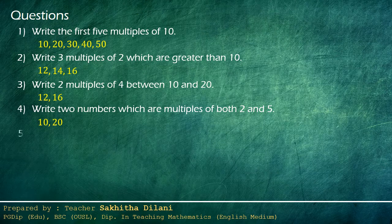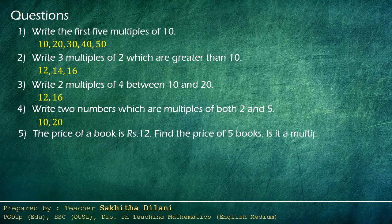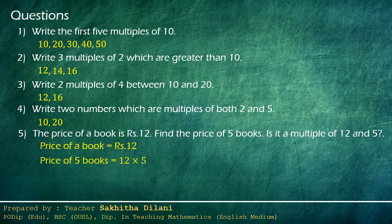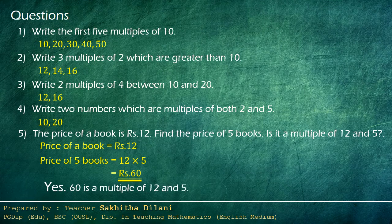Let's see another example. The price of a book is twelve rupees. Find the price of five books. Is it a multiple of twelve and five? First, let's find the price of five books. If the price of a book is twelve rupees, the price of five books is twelve times five, which gives sixty rupees. In the question it is asked: is it a multiple of twelve and five? Yes, it is a multiple of twelve and five, because twelve into five gives sixty. I think you may understand now how to write multiples of a given number.